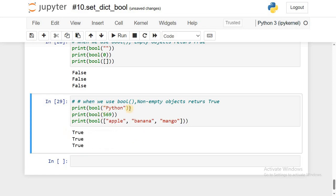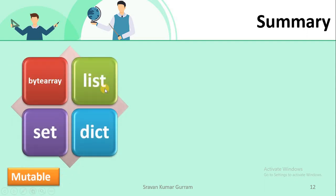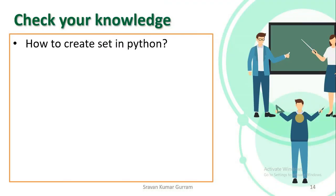In summary, let's understand which types are mutable and which are immutable. Bytearray, list, set, and dictionary are mutable types. All numerical data types — int, float, complex — are immutable. Boolean, string, bytes, range, tuple, and frozenset are also immutable data types.